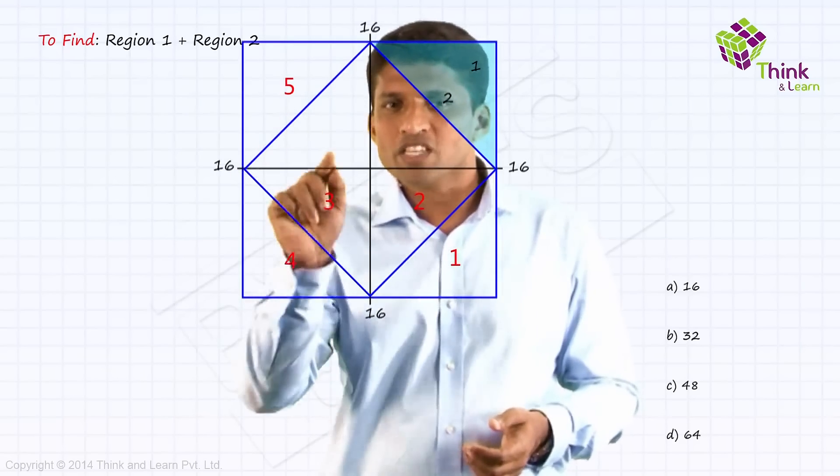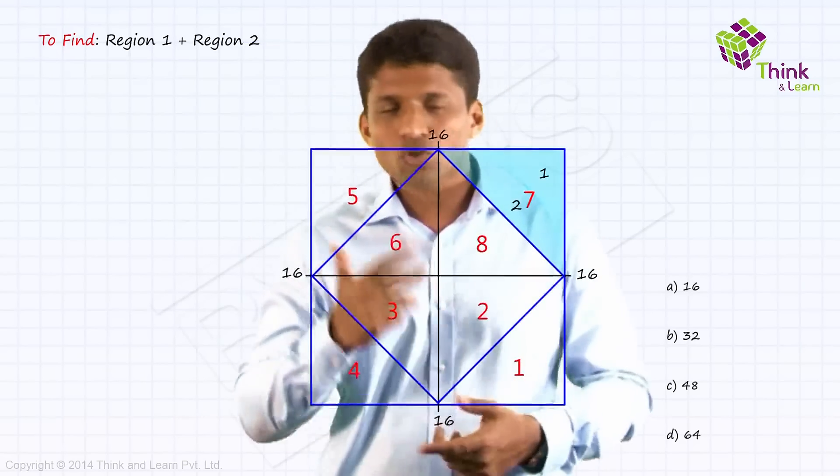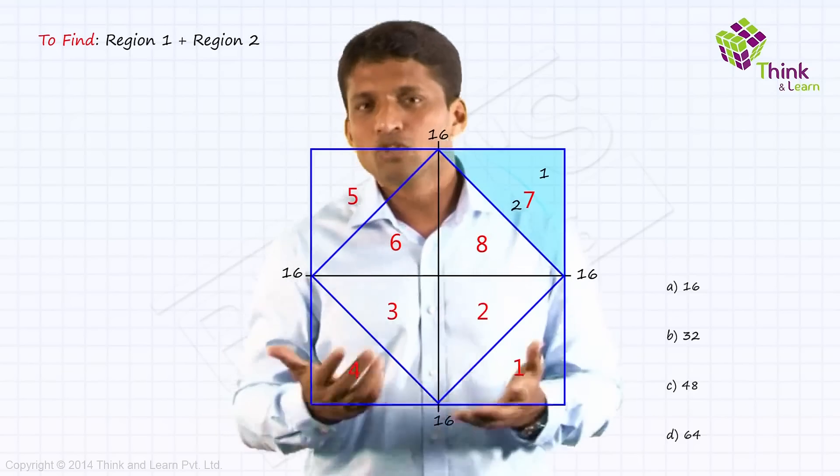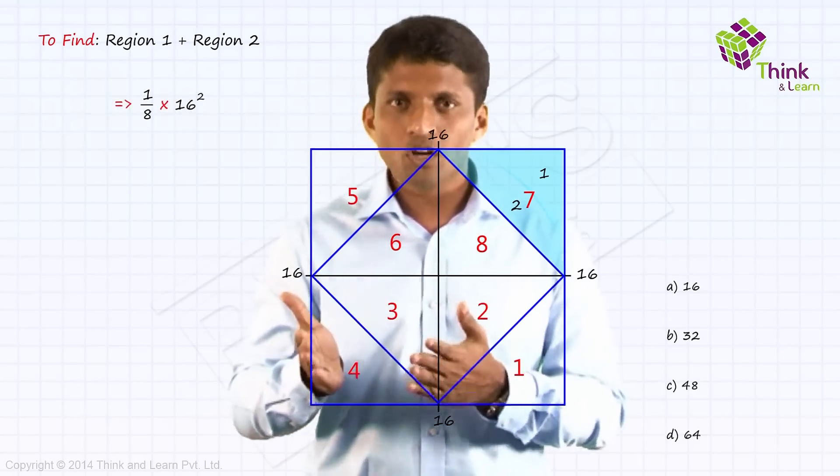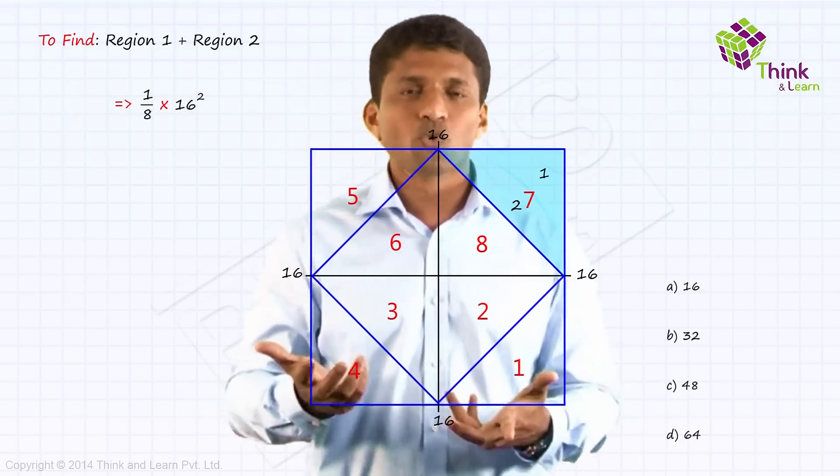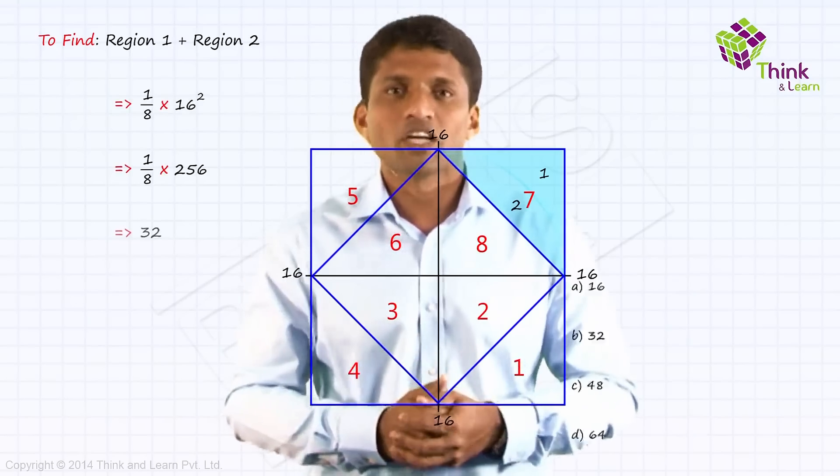1, 2, 3, 4, 5, 6, 7, 8. All of which, only one region is shaded. So answer is 1 by 8 of, the outer area anyway is 16 square. So 1 by 8 of 256, you will get the answer as 32.